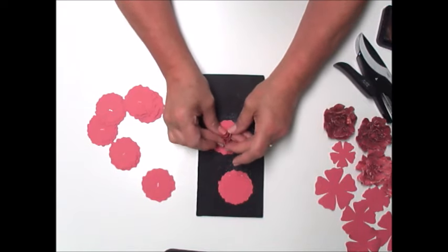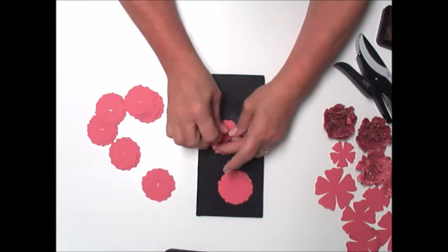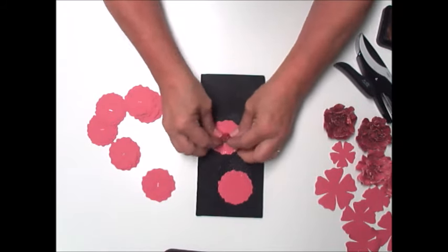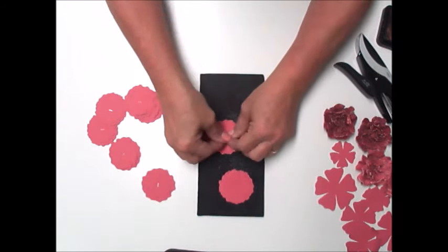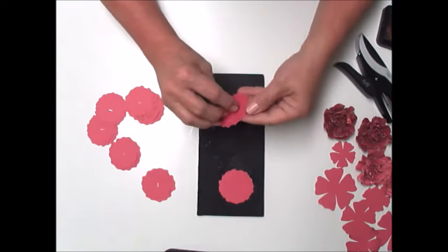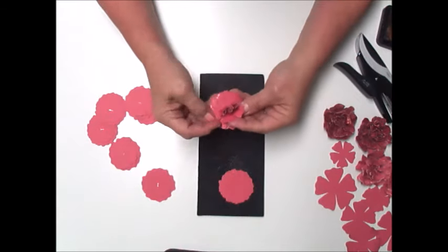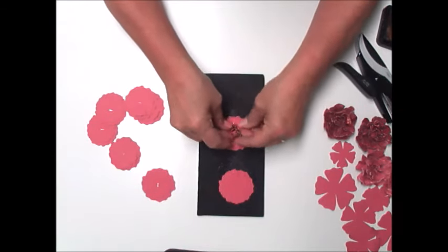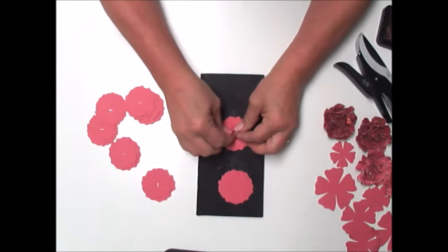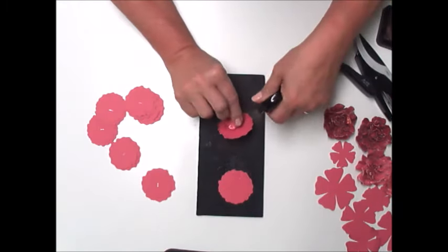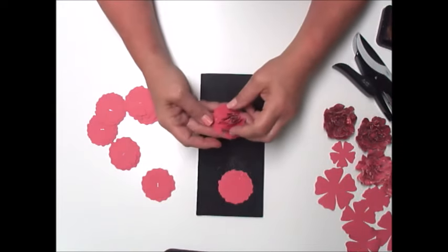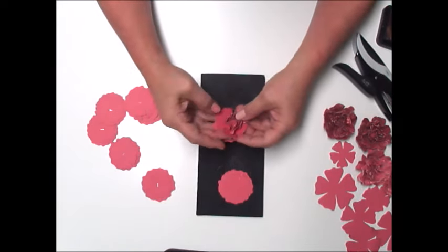You crinkle, crinkle, crinkle and that staple kind of gives you a center to work from. I just kind of layer them to where they're going to crunch together. You just crunch, there's no method. You can see that white core paper is showing.